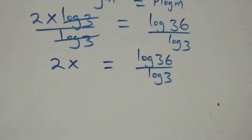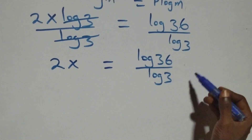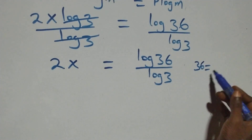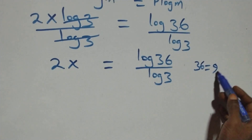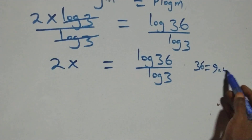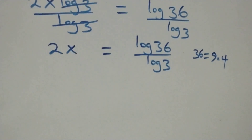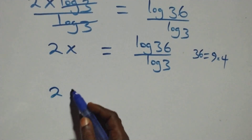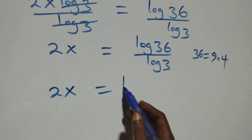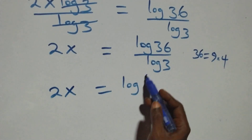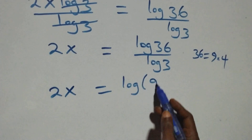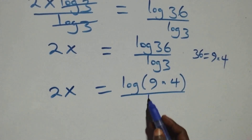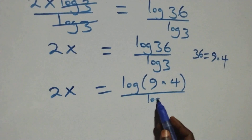Then from here we can express 36 as 9 times 4. Then what we have here becomes 2x equals log of 9 times 4, over log 3.